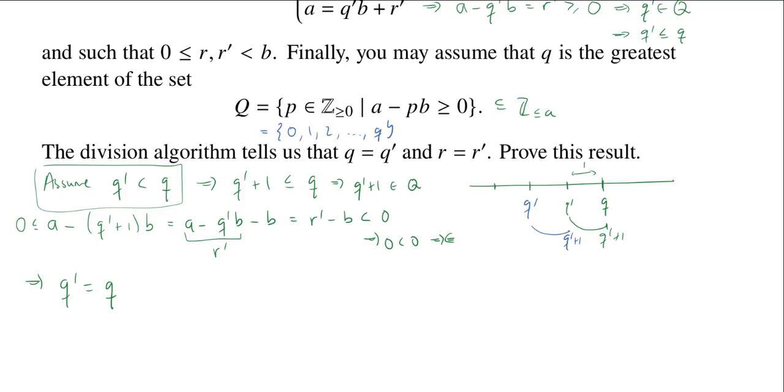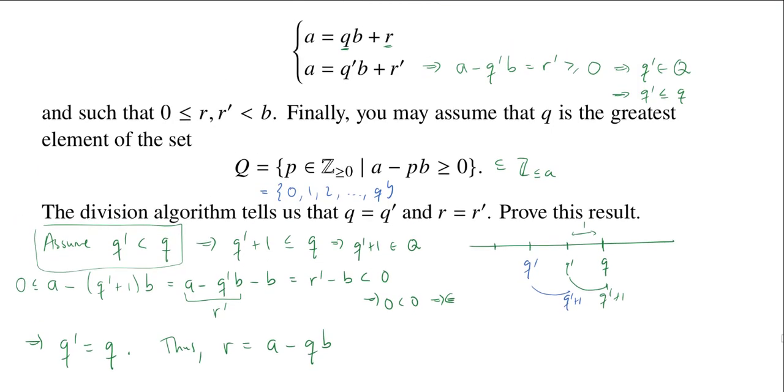And now getting that R is equal to R prime should be a very straightforward matter. All right, thus, well, what is R? R is equal to A minus QB. This comes from our assumption that A is equal to QB plus R.